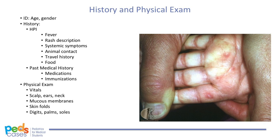And what is the time frame of development? On physical exam, you'd want to get vital signs and examine the scalp, ears, neck, and mucous membranes, skin folds, digits, palms, and soles. Depending on where the rash originated, you would start there and then make sure to examine the rest of the body, as location of rashes can guide the differential.